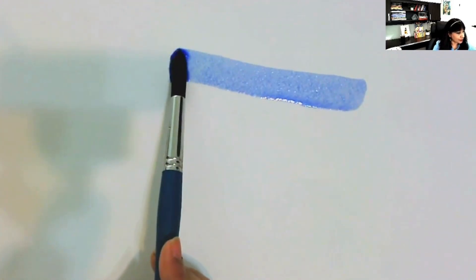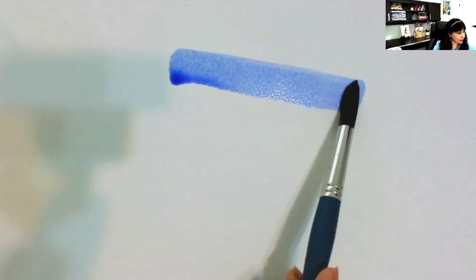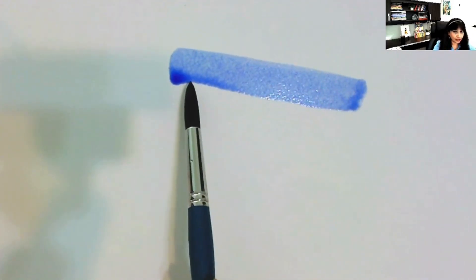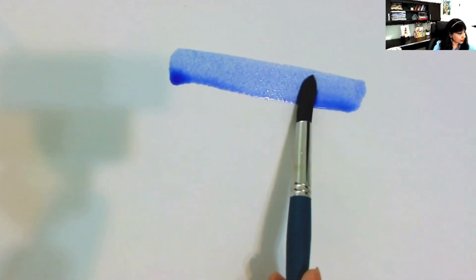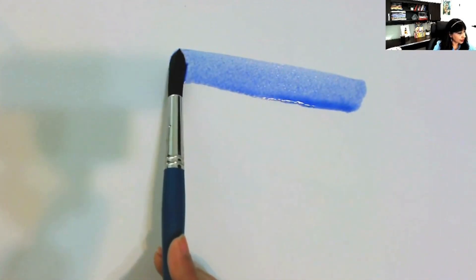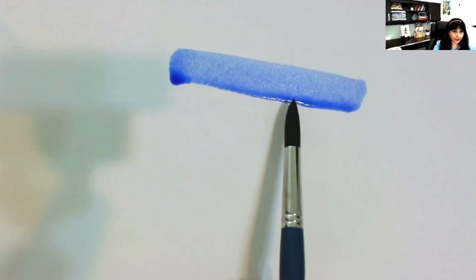Now again I'm going from first point to another point. Now why I'm repeating that? That is because I need to get this watercolor bead. Again I'm going from first point to this point. Now you will see that the watercolor bead is formed.